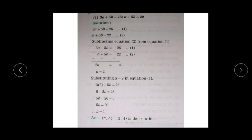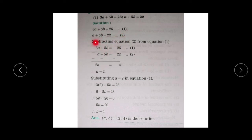Consider another example: 3a + 5b = 26 and a + 5b = 22. Observe that the coefficient of b is 5b in both equations. Numbering them equation 1 and 2, since the signs of 5b are the same, you want to subtract these equations.